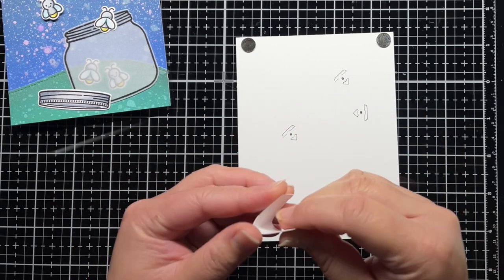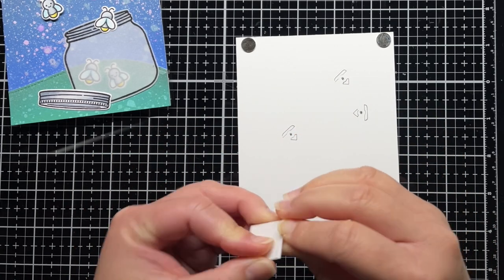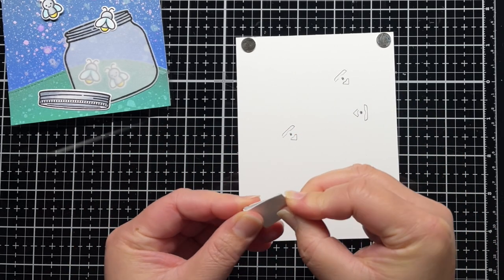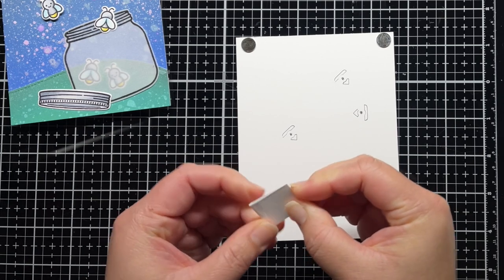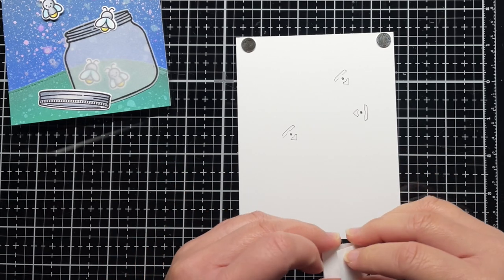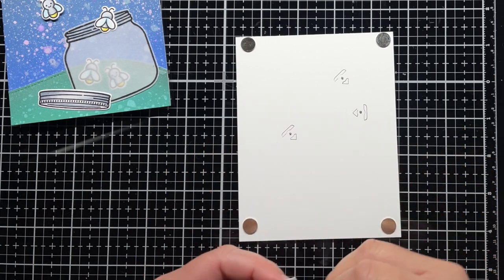Before I add my tape, I create my battery holder by cutting a piece of white cardstock to three quarters of an inch by two inches. I score and fold it at the halfway point. You can find a more detailed video about creating battery holders in the link above.